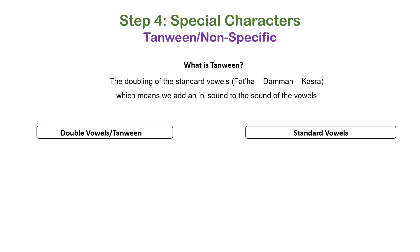In previous lessons we introduced and discussed vowels in Arabic — more specifically short vowels: fatha, dhamma, and kasra. What happens when these vowels are doubled? Instead of one fatha you see two, instead of one dhamma you see two, and instead of one kasra you see two. This doubling of vowels is referred to as tanwin. Without using too many fancy terms, tanwin — or the doubling of vowel symbols — just means we add an 'n' sound to the pronunciation of that vowel.